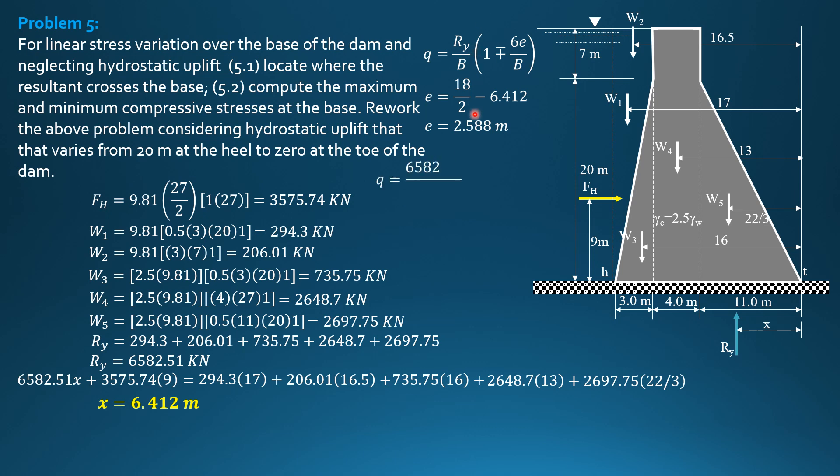Q is R-Y 6582.51 over 18, quantity 1 minus plus 6 times 2.588 over 18. So for minus, that's the soil pressure at the heel, is equal to 50.22 kilopascals. For plus, that's the soil pressure at the toe, is equal to 681.2 kilopascals.